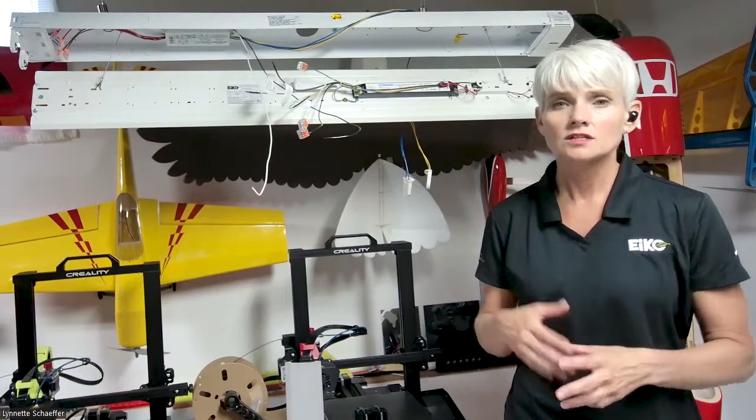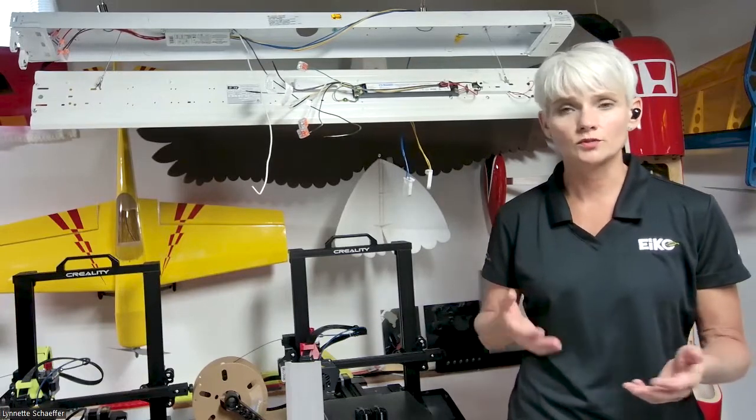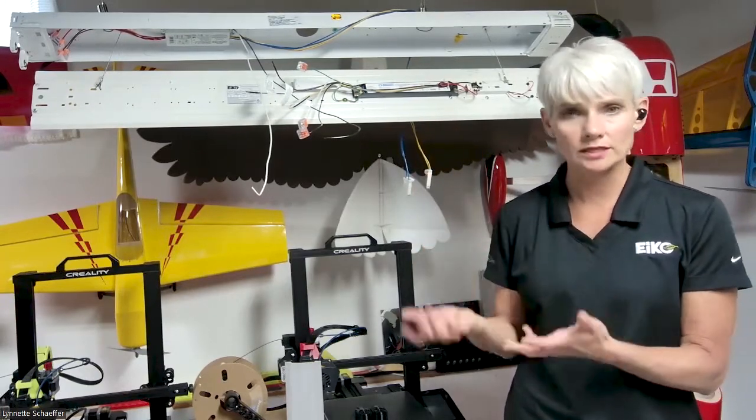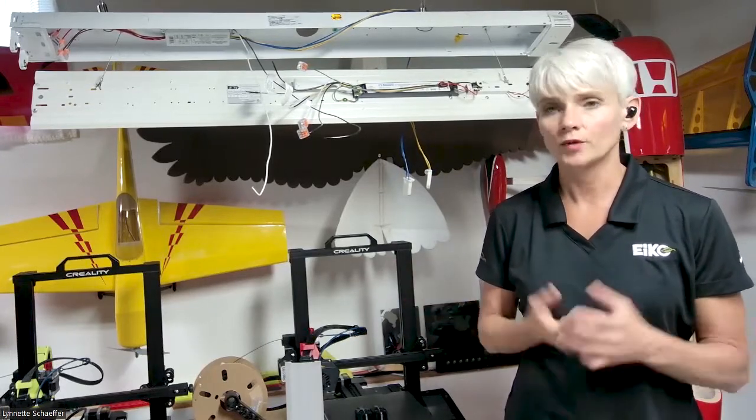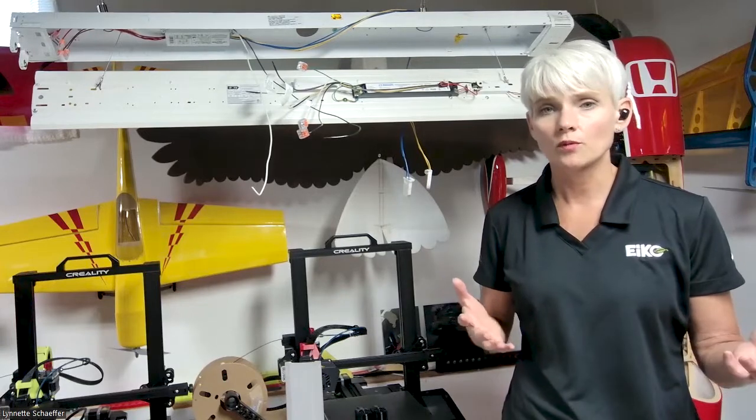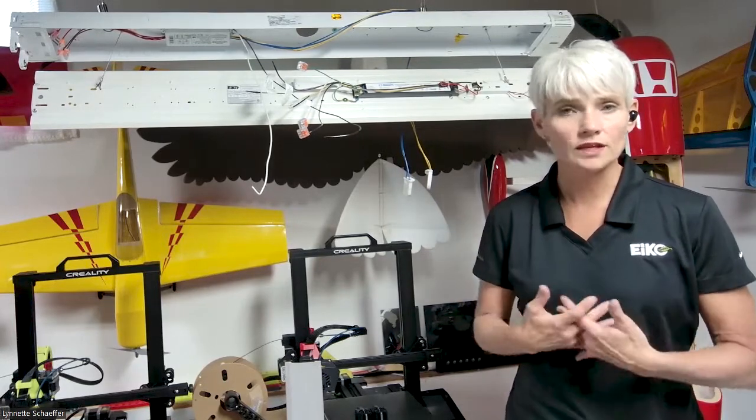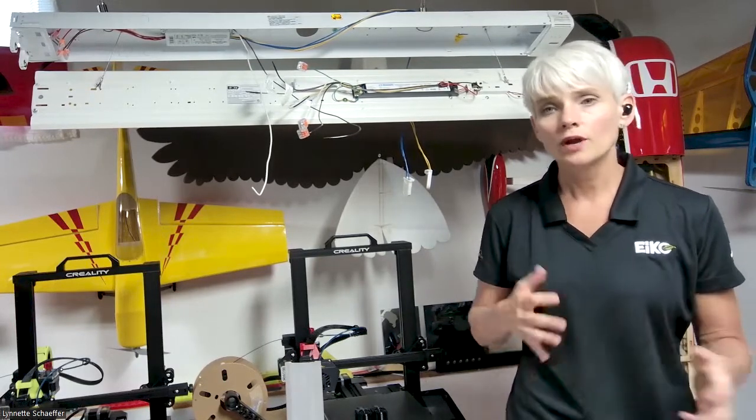So what do you do with these old outdated fixtures? Well, you can certainly take it down and replace it with one of IKO's replacement strip fixtures, a brand new fixture. You can certainly also replace it with one of IKO's LED tube lamps. That's certainly a great option.